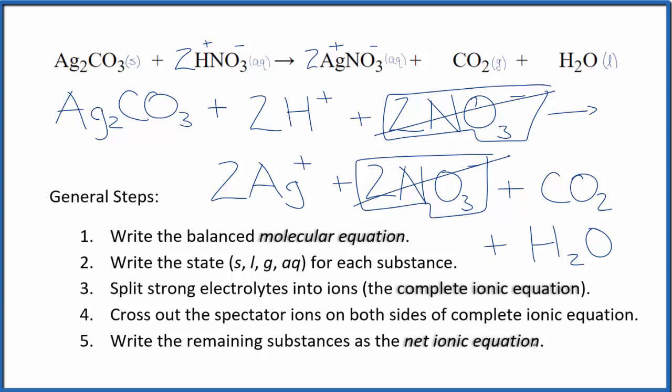Everything else is unique. That makes this the net ionic equation for Ag2CO3 plus HNO3. I'll clean this up and write the states. We'll have our net ionic equation.